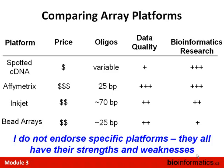Comparing platforms is tricky. There are big and well-described differences in price — spotted arrays are by far the cheapest though not really manufactured much anymore; Affymetrix arrays are probably the most expensive partly due to market pricing; inkjet and bead arrays are in the middle. Sequence length ranges from highly variable for spotted arrays, 25 base pairs for Affymetrix and bead, and 70 for inkjet. Spotted arrays have the most artifacts and challenges to remove.